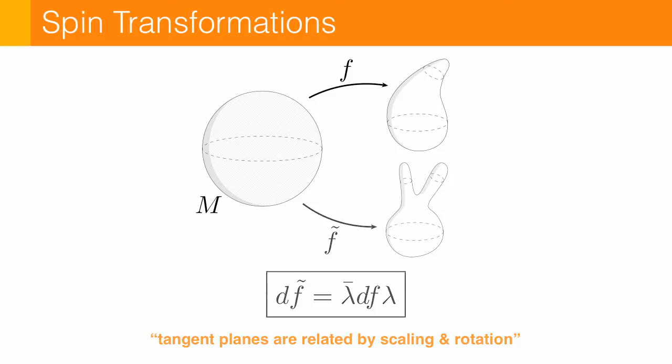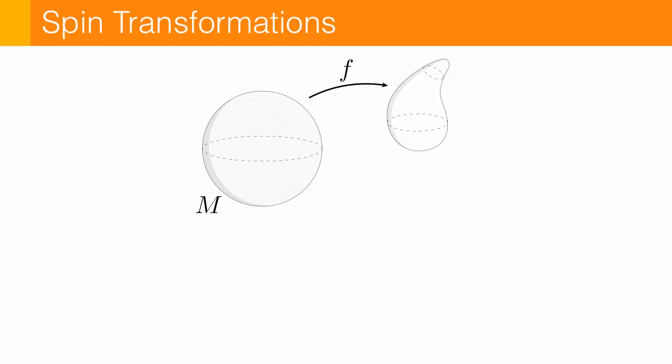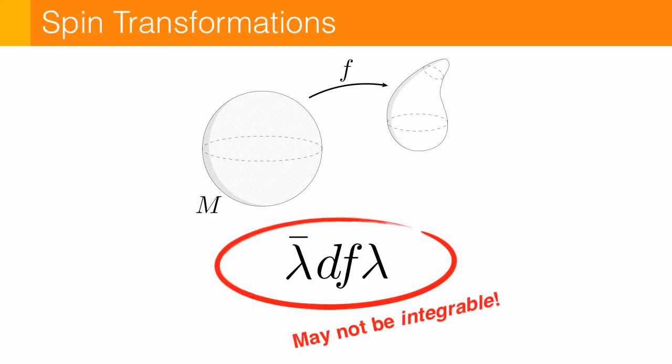But let's take a look at a more typical situation, which is I start out with just one geometry. So I have a surface mesh. And now I want to come up with a conformal transformation. And you might say, okay, well, just apply a rotation and scaling at each point. The problem is that the results may not be integrable. So we go back to this picture of edge vectors not fitting together.